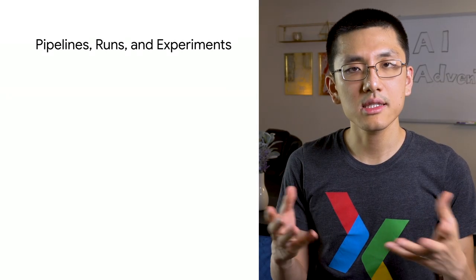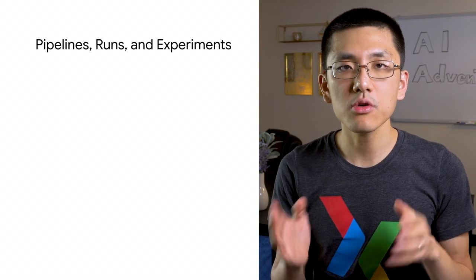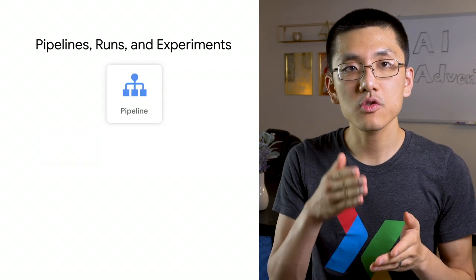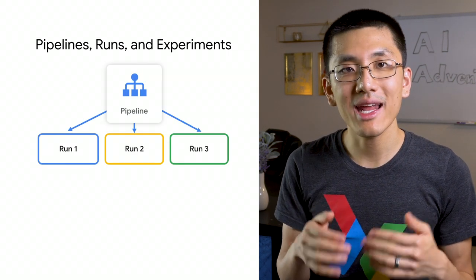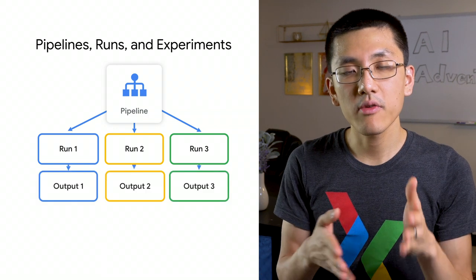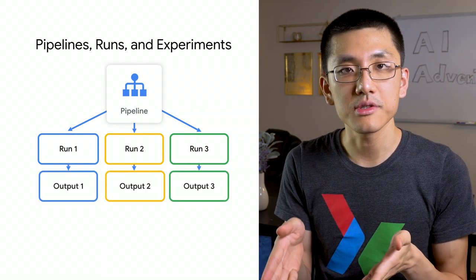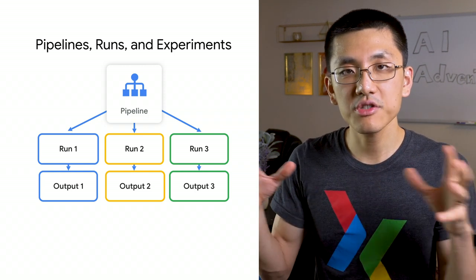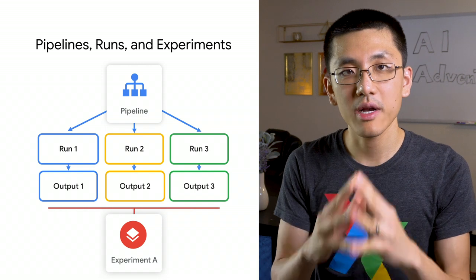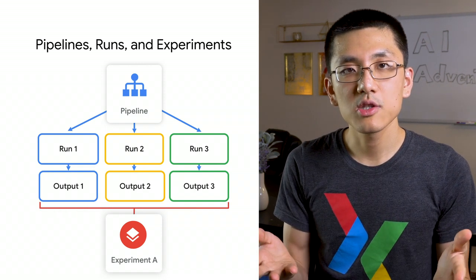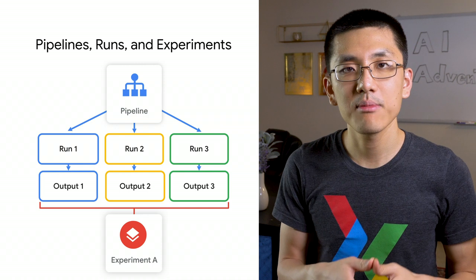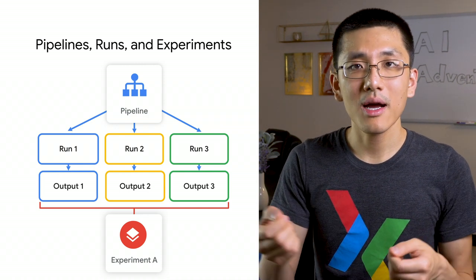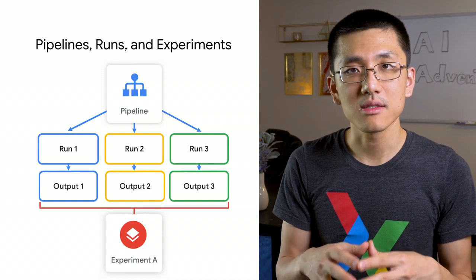Pipelines are like templates. They define what needs to be run, but don't represent the actual execution of code. That's what runs are for. You must run a pipeline in order to get any output. Each time you run a pipeline, a new set of outputs are produced. These runs are single executions of a pipeline and individual runs are associated together into an experiment. You can name your experiments whatever you want and you're not constrained to having the same type of pipeline runs in one experiment, so you can include different types of pipelines in the same experiment if you want to.